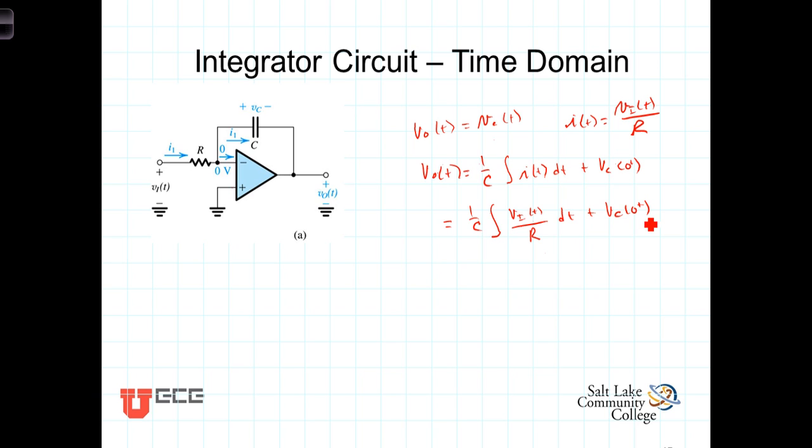We can factor the R out and we get then that the output voltage as a function of time is equal to 1 over R times C times the integral of the input voltage as a function of time plus the initial condition.